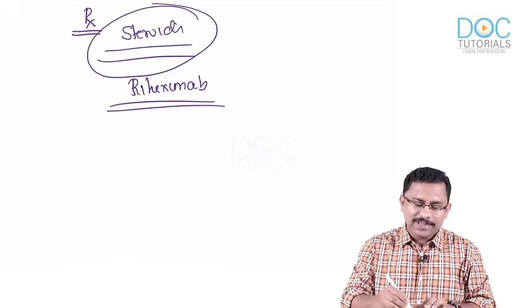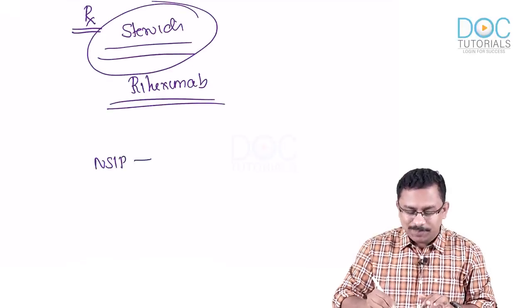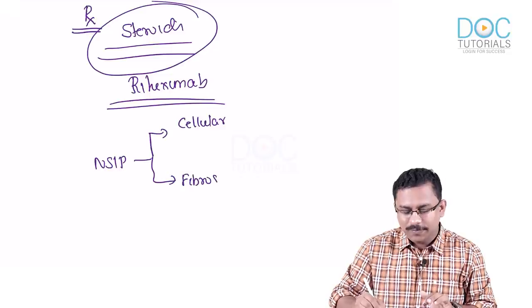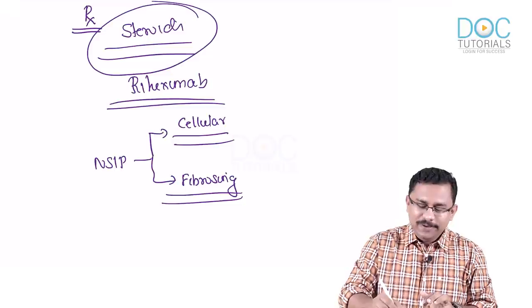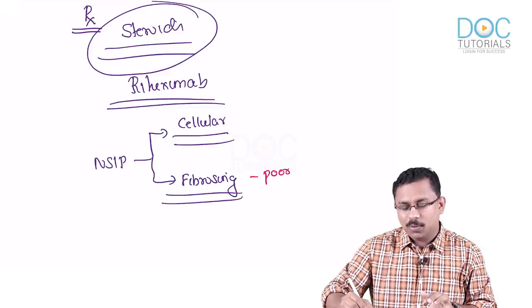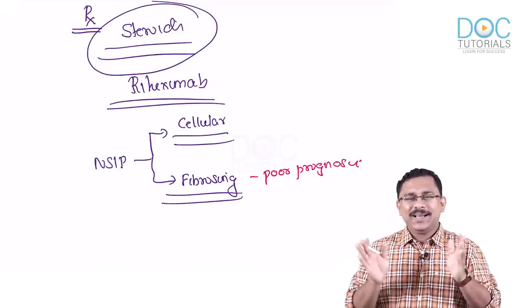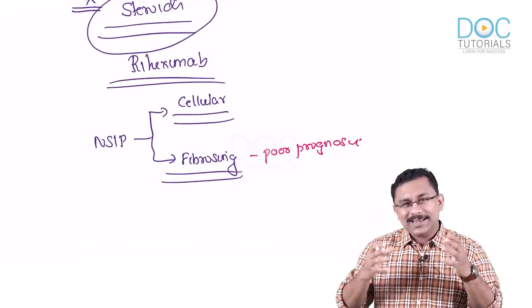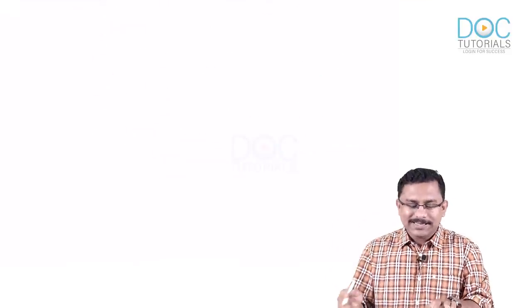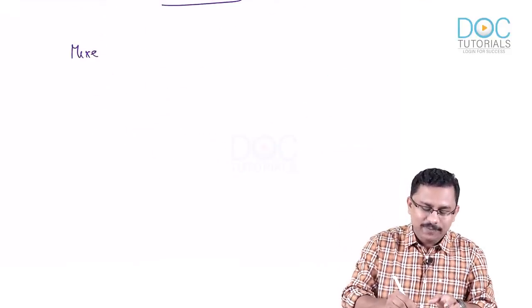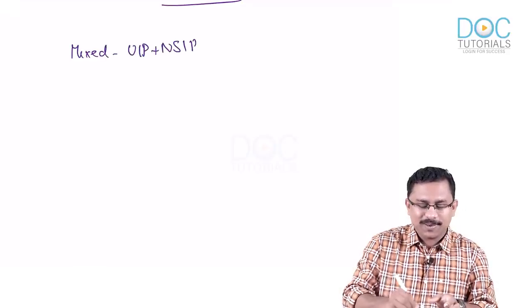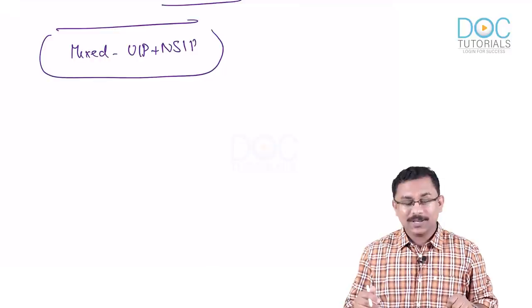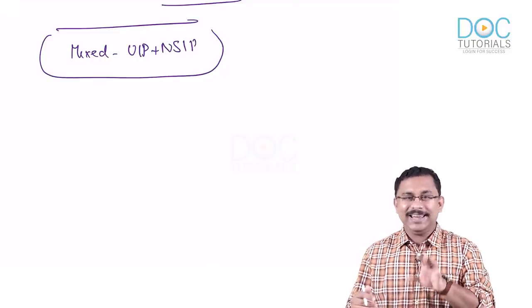NSIP has two subtypes: a cellular subtype and a fibrosing subtype. If it is the fibrosing subtype, it will have a poorer prognosis. Also worth noting: in some case scenarios there can be a mixed pattern — where radiology shows features of both UIP and NSIP.